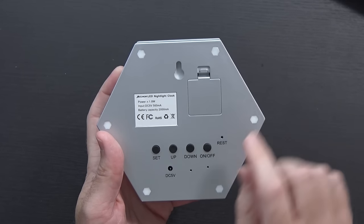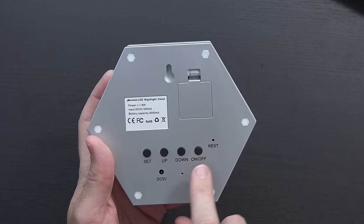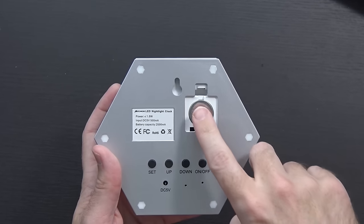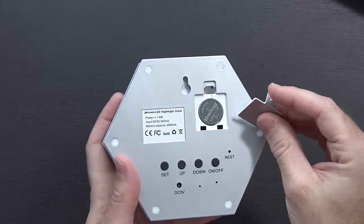On the back, there are buttons. So you have set, up, down, and on and off. And then there's a little click thing here, which has a CR2032 lithium watch battery.